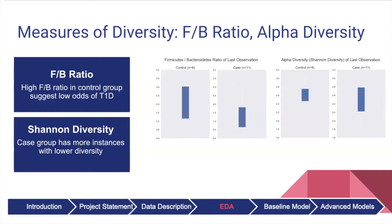The higher Firmicutes-to-Bacteroidetes (FB) ratio for the control group suggests this lowers the odds of having type 1 diabetes. Similarly, the Shannon Index shows that the case group has more instances of lower diversity, which is consistent with other studies.